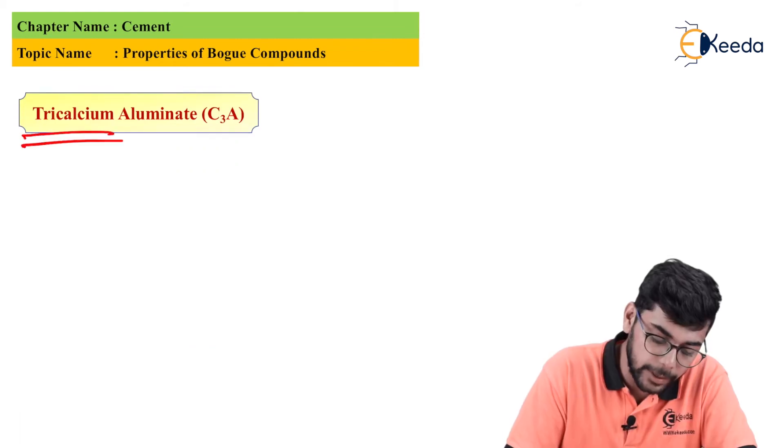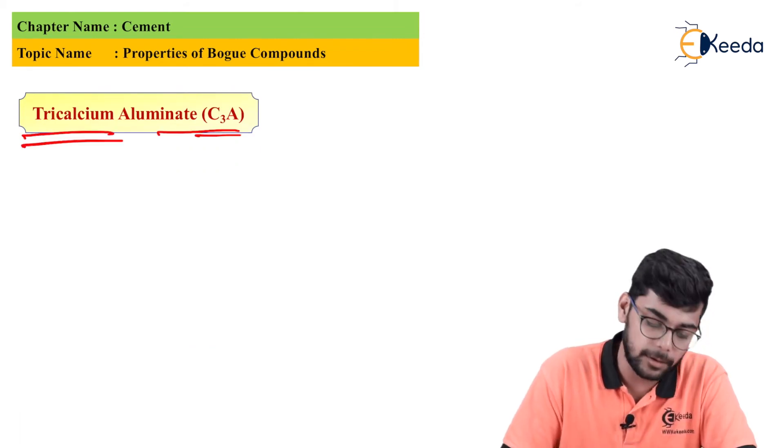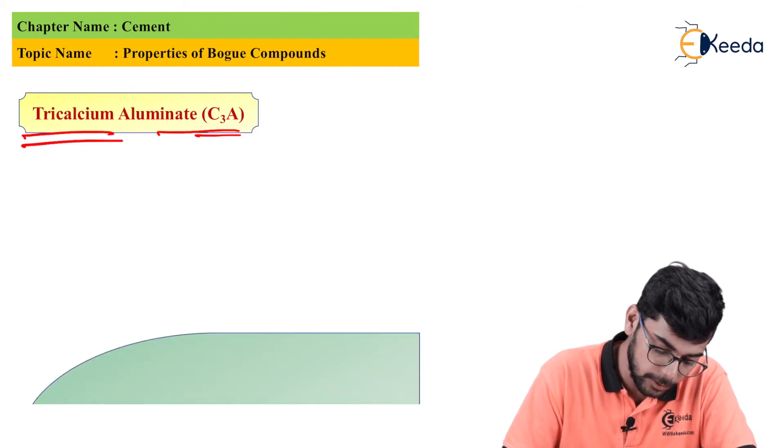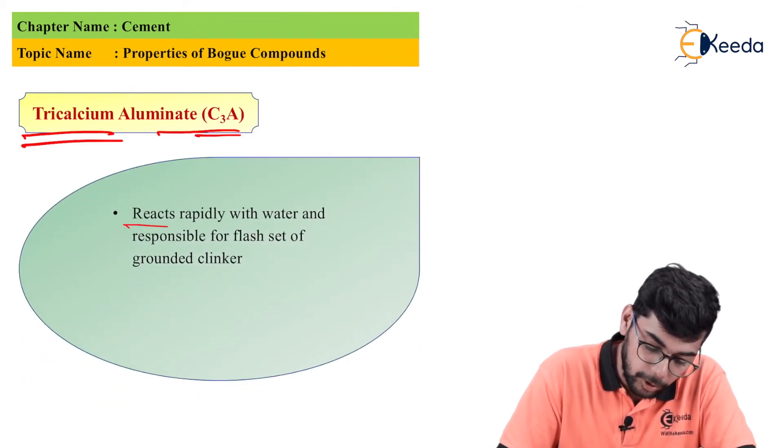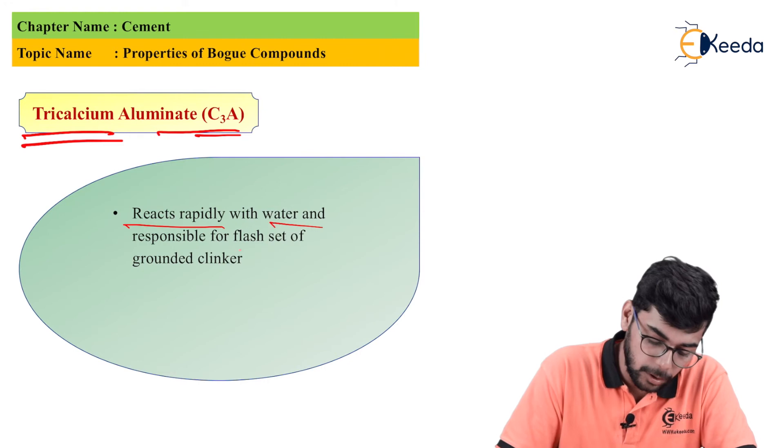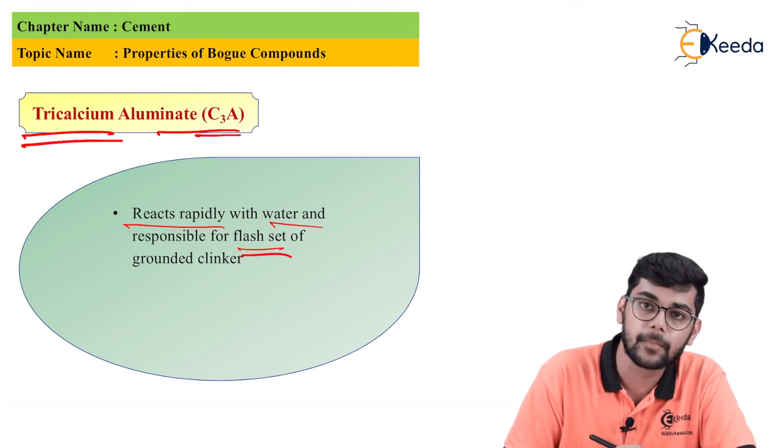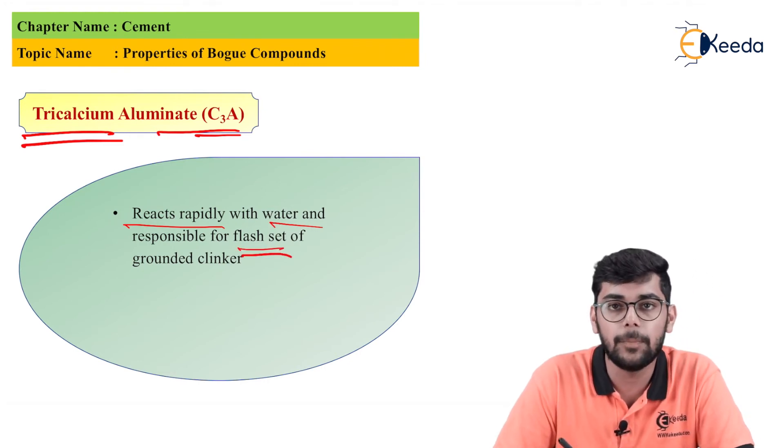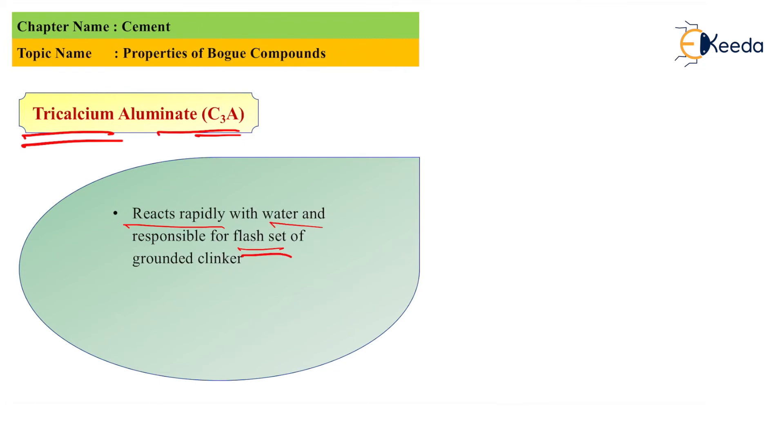Now let's talk about tricalcium aluminate. Tricalcium aluminate, C3A, reacts rapidly with water and is responsible for flash set. But this is not desirable, and for this we must add gypsum around 2 to 3 percent to reduce flash set. Also C3A is prone to chemical attack.